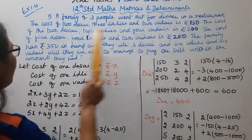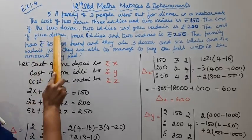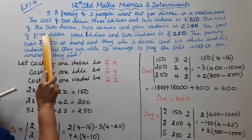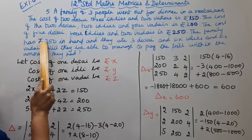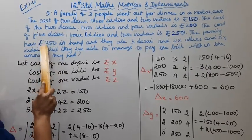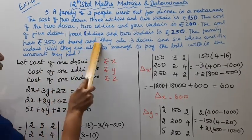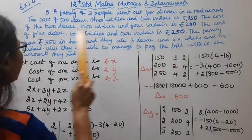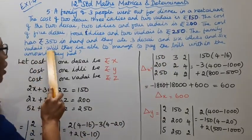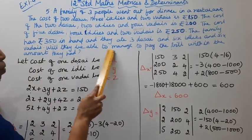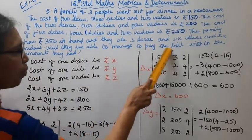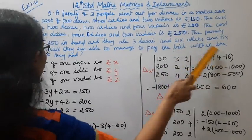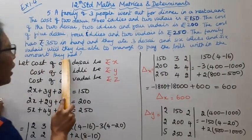The family has Rs. 350 in hand. And they ate 3 dosai, 6 idlis and 6 vadais. Will they be able to manage to pay the bill within the amount they had?